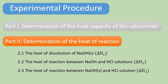Sawaddi ka. Now we come to part number two to determine the heat of reaction, and we are going to do three parts to find out what is delta H1, delta H2, and delta H3. Remember that we need the heat capacity from part one for the calculation.